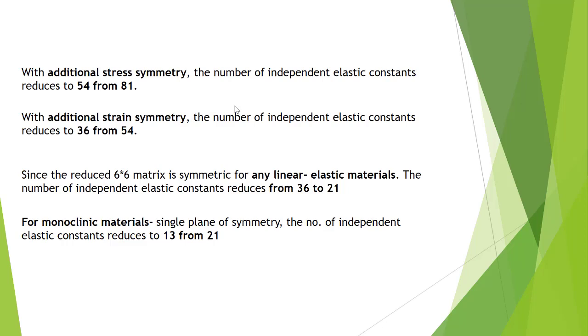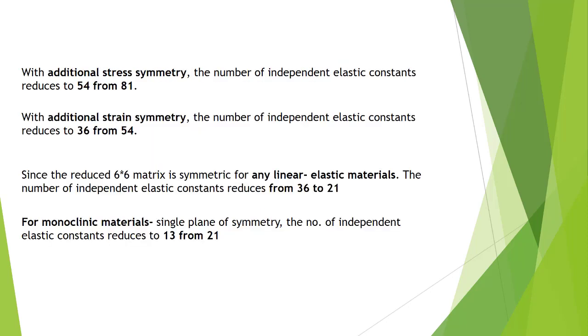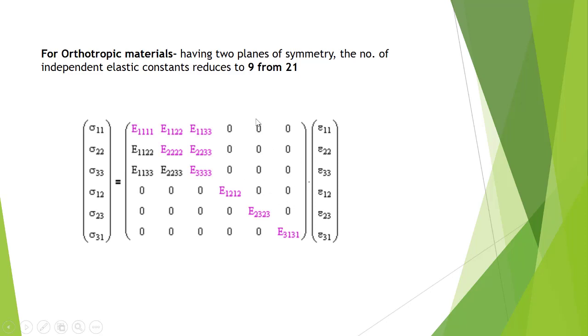Further, if we introduce two planes of symmetry, then this number 21 reduces to 9. That's why these elements are 0.